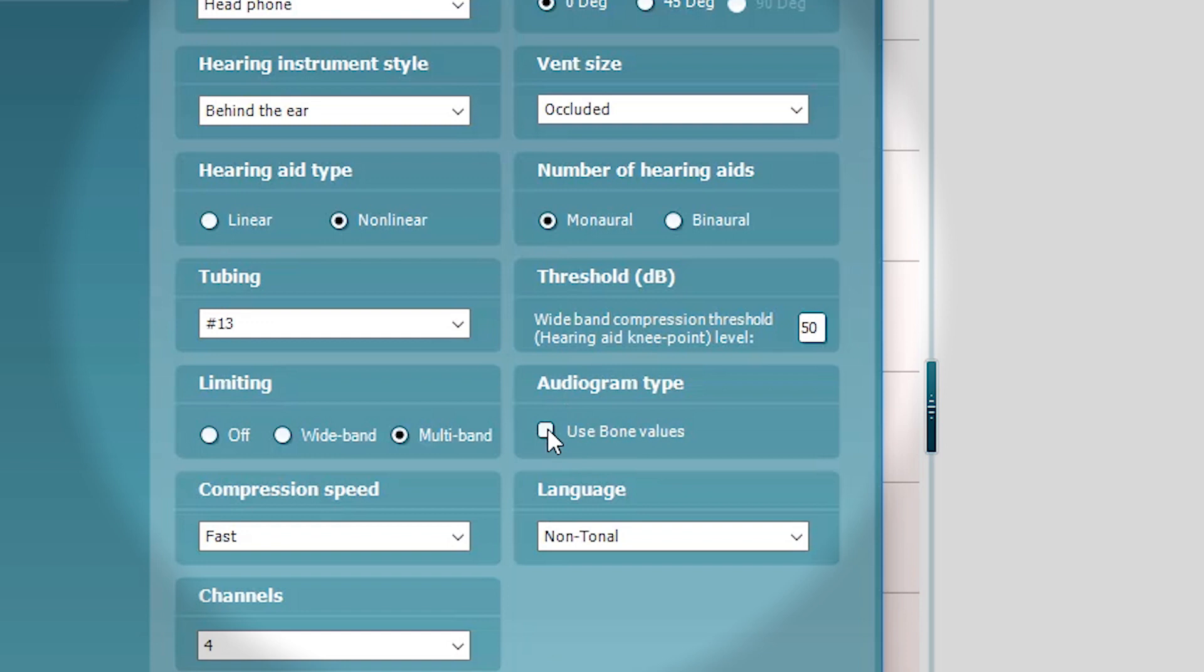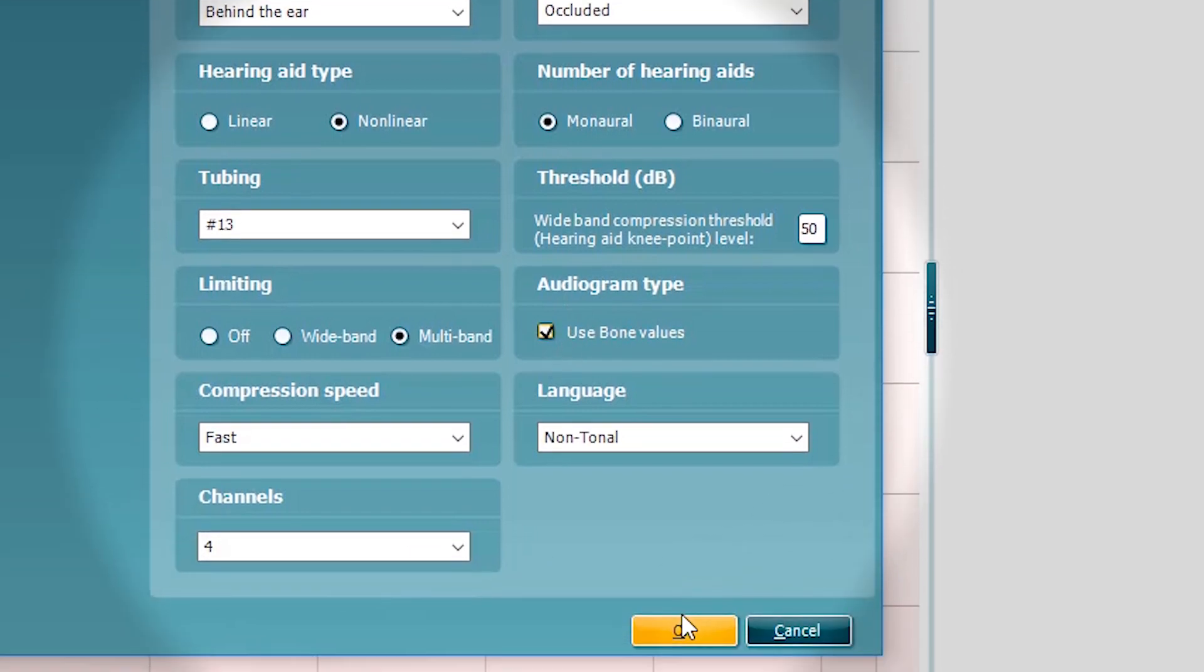If I wanted to now enable bone values as an example, I can click OK on that. I can also change anything else in here, so should I wish to swap to a binaural fitting where it's actually a monaural fitting in this scenario, then I could do so as well.